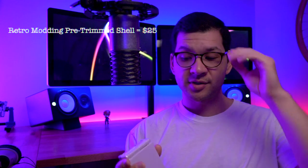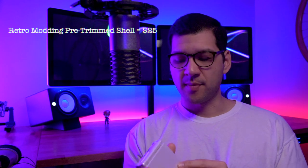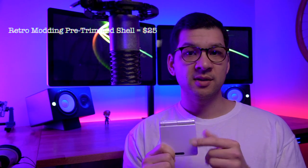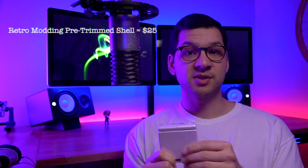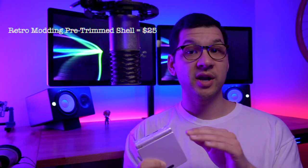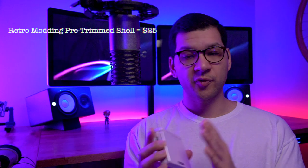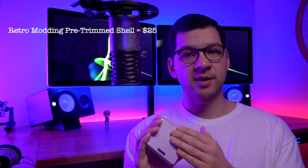That's just going to make your life easier, and this essentially becomes a drop-in kit at that point. The pre-trimmed shell from Retro Modding costs about $25. You can buy an aftermarket shell and trim it yourself for $8 to $10, but the precision trimming that Retro Modding does with a CNC machine is very high tolerance. I do recommend getting the shell.